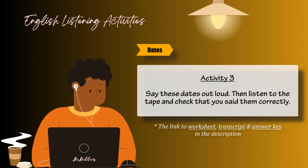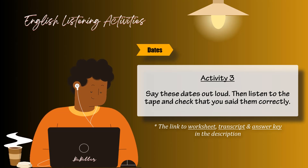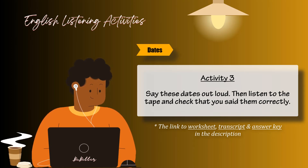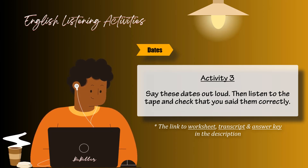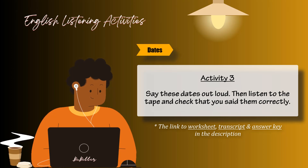Activity three. Say these dates out loud. Then listen to the tape and check that you said them correctly. The seventh of June, nineteen forty-eight. The eighth of February, nineteen eighty-five. The twenty-third of March, nineteen eighty. The second of January, nineteen eighty-four. The fourteenth of November, nineteen eighty-seven. The twenty-fourth of December, nineteen sixty-two. The fourth of September, nineteen seventy-two. The third of October, nineteen twenty-one. The eighth of July, nineteen fifty-six. The twenty-ninth of February, nineteen eighty.